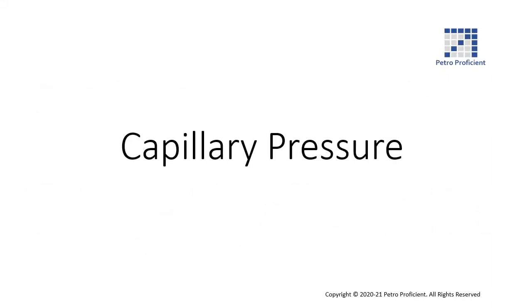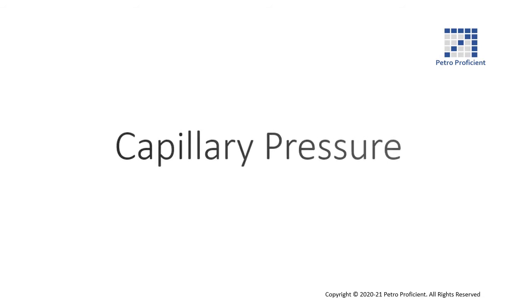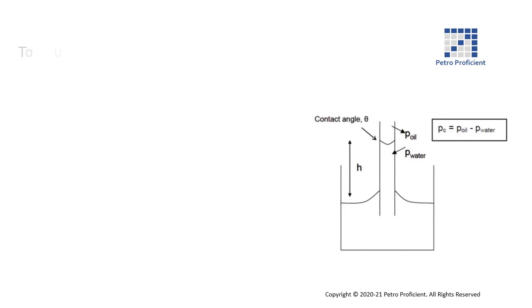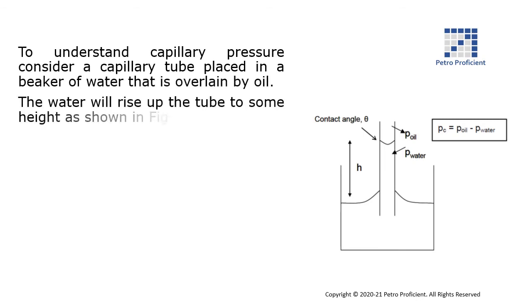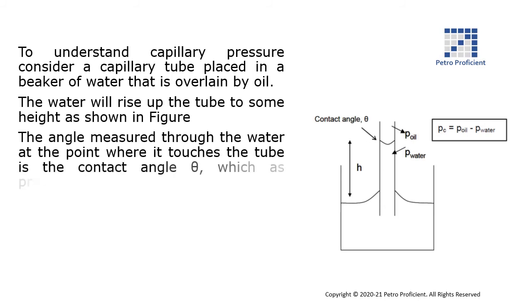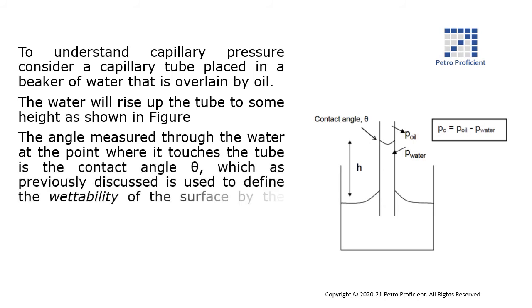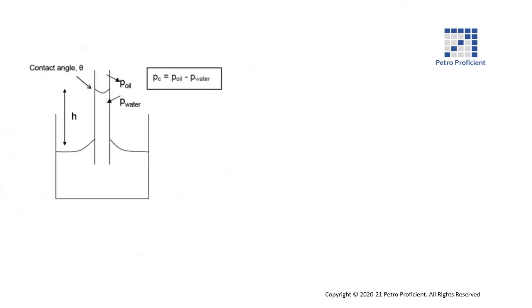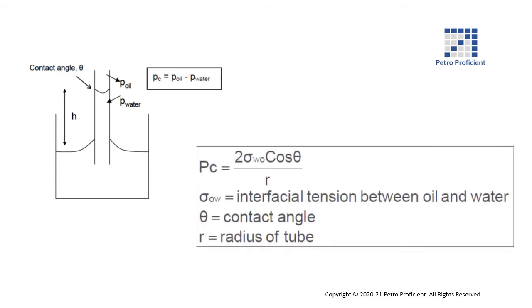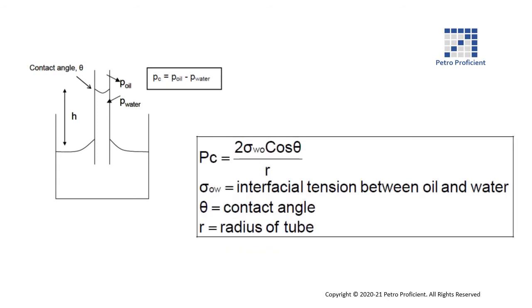To understand capillary pressure, consider a capillary tube placed in a beaker of water that is overlain by oil. The water will rise up the tube to some height as shown in the figure. The angle measured through the water at the point where it touches the tube is the contact angle theta. Contact angle, as previously discussed, is used to define the wettability of the surface by the water. In this case, the system is said to be water-wet. Capillary pressure can be calculated by the following equation.